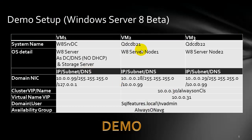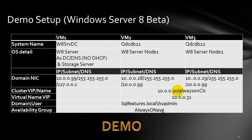Remember, here is the configuration we are using for the future examples. As long as you are aligned to these configurations and close to them, you will be able to finish most of the configurations without any troubles. Based on this configuration, we created a sqlfeatures.local domain, created a user hvadmin, and created a node qdcdb21 with IP 10.0.0.28. We have completed this part.